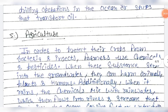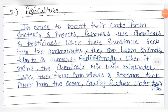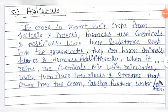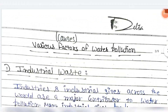In order to protect their crops from bacteria and insects, farmers use chemicals and pesticides. When these substances creep into the groundwater, they can harm animals, plants, and humans. When it rains, the chemicals mix with rainwater, which then flows into rivers and streams that filter into the ocean, causing further water pollution. Now we have studied the definition, object, and causes of water pollution, and we will study the Constitution of the Central Pollution Control Board.